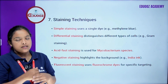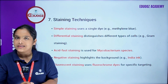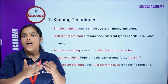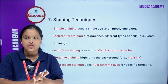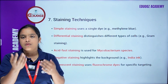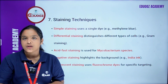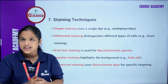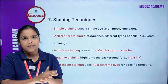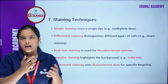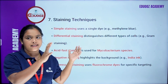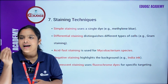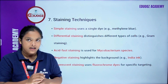Staining techniques: Simple staining uses a single dye such as methylene blue. Differential staining differentiates between Gram-positive and Gram-negative organisms. Acid-fast staining uses fluorochrome dye for specific targeting and is used in fluorescent staining.